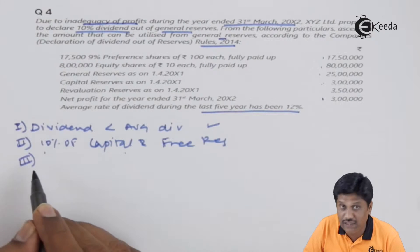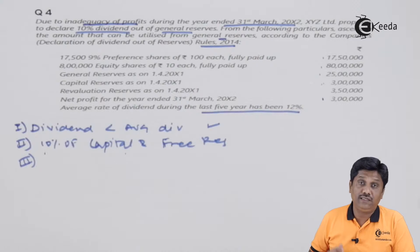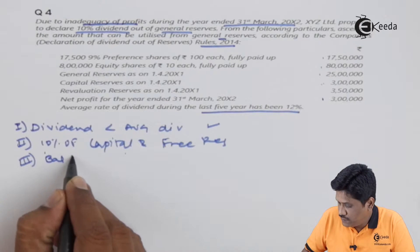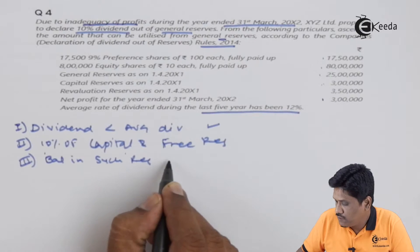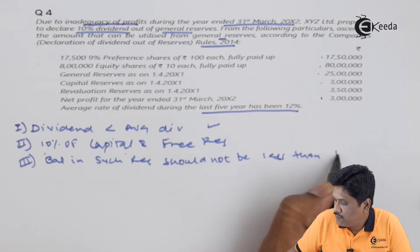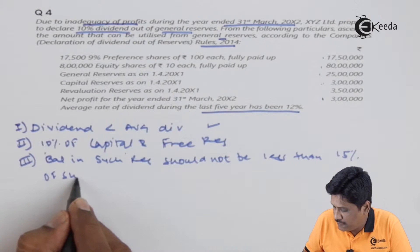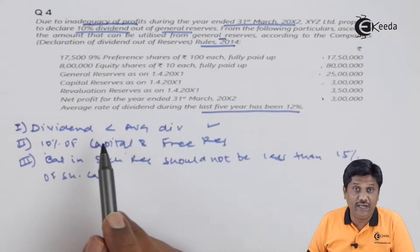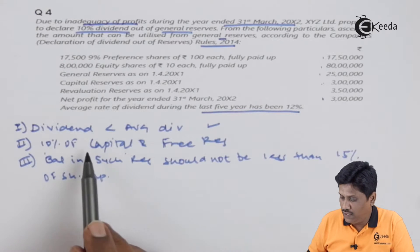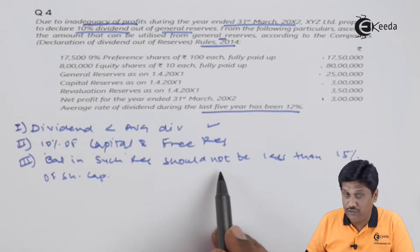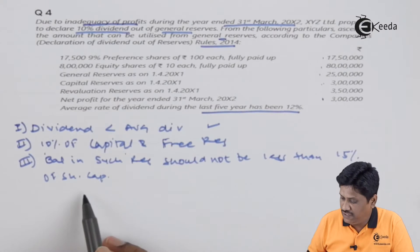तीसरा rule यह है कि आप जो भी amount withdraw करोगे, वो withdraw करने के बाद reserve में जो balance है वो आपके capital का 15% होना चाहिए. That is, balance in such reserve after withdrawal should not be less than 15% of share capital. यह आपका तीसरा rule है.